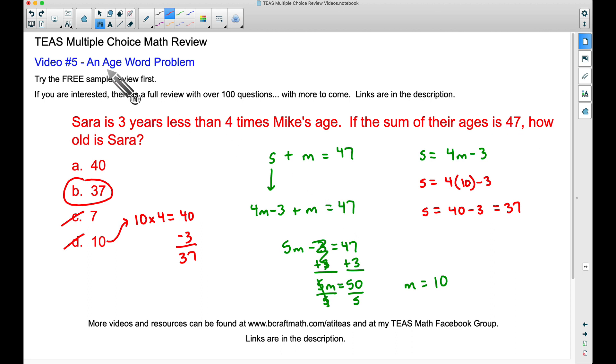You could essentially skip all this, but it's still good to know these techniques, especially if the multiple choice tips aren't working out. Notice we said Mike was 10. We found 4 times Mike's age, which was 40. We found 3 years less than that, which is 37. And 37 plus 10 equals 47. There you have it, an age word problem. If you missed the first part, check out that free sample. If you like it, check out that full review as well. You can find links in the description.